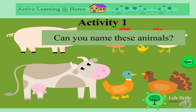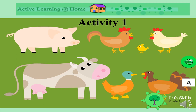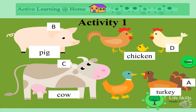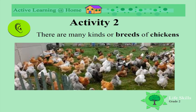Can you name these animals? Let's have a look. Animal A - can you remember? Yes, it's a turkey! What is B? Yes, you're right, it's a pig. And C says moo - yes, a cow! What is D? Cluck cluck cluck - a chicken! And E says quack quack quack - yes, a duck! Well done.